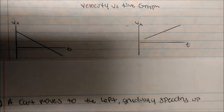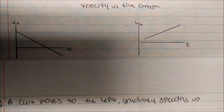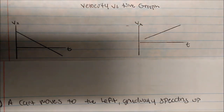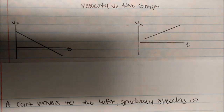The first thing to remember is that this is in the x direction. Anything below the zero mark is negative, or moving to the left. Anything above that is moving to the right. This is how we read these graphs.